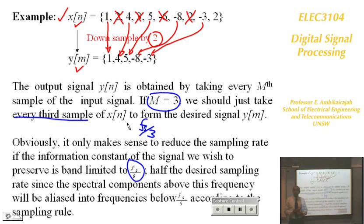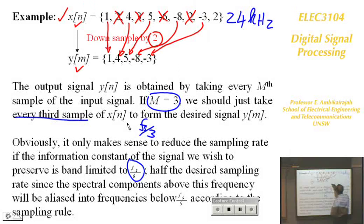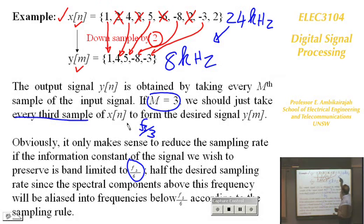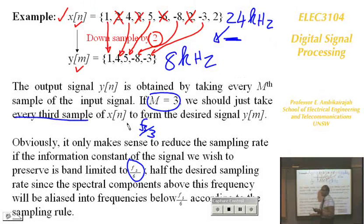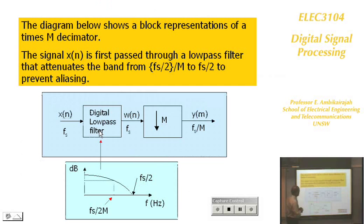So before decimating, you must ensure the signal is properly filtered. For example, if the input is 24 kHz and the output will be 8 kHz, the signal must pass through a low-pass filter with a bandwidth of 4 kHz before downsampling. You can only do downsampling if the signal first goes through a low-pass filter.